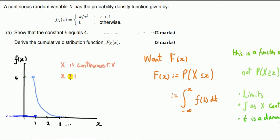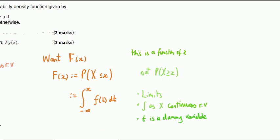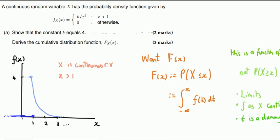Since X is a continuous random variable and the PDF takes positive values only when X is bigger than one, we want the CDF. By definition, the CDF is the probability that X is less than or equal to a particular value, which we denote by small x. In terms of the graph, for a given small x, we want the area to the left of that point.